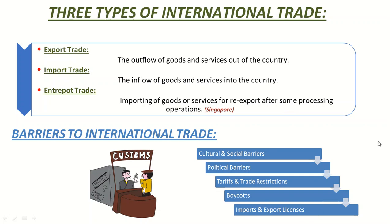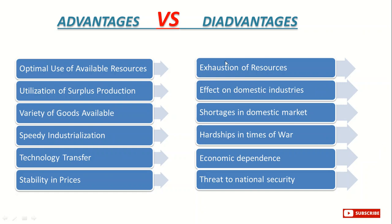What are the advantages and disadvantages of international trade? First, advantages: it lets optimal use of available resources for a country. It lets utilization of surplus production — if a country is producing a product more than its need, it can export that product or service to some other country and earn money. Variety of goods becomes available — if a country is not making many products in a special category, it can import those products for its people. Speedy industrialization and technology transfer — when you import things, you import technology as well, and you can import machinery to speed up your industry.